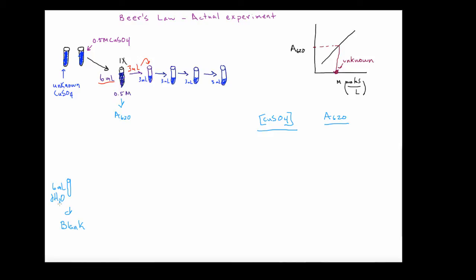If you're in a biochemistry lab, your 6 mL of DH₂O blank may be a buffer with other additives, so pay attention to what your system is. In general, you're going to blank the instrument. Then I transfer the 0.5 molar solution and get my A620. For my 0.5 molar concentration, my absorbance — and I did this for real — is 0.930.